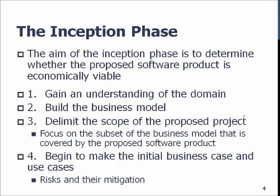The second bullet point, the business model, is the precursor to use cases. For a system, it means we understand how it functions — what are the main activities, features, objectives, or problems the software has to solve. Based on understanding the domain and the activities, we then delimit the scope of the project so that it actually solves the problem but isn't too costly or complicated.